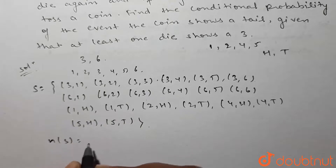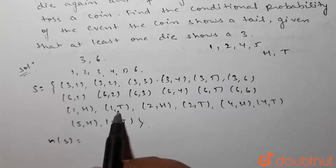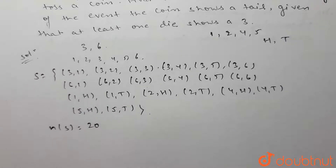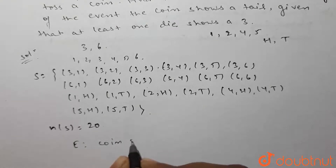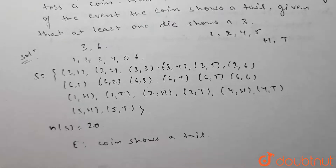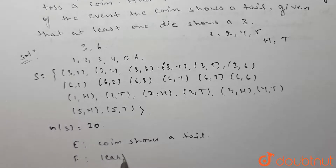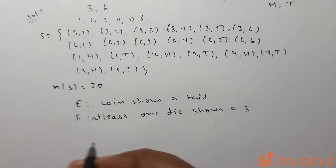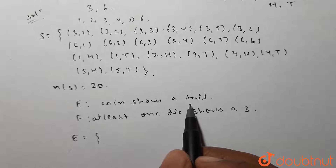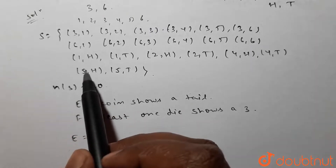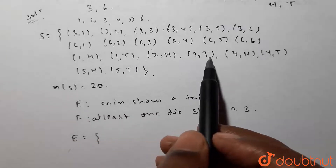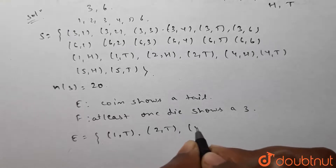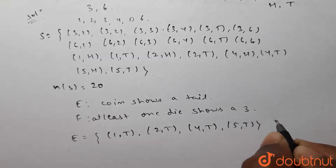So these are all the elements in the sample space. The total number of elements in the sample space is twenty. Let event E be that the coin shows a tail, and let event F be that at least one die shows a three. Event E contains the pairs which have tail: (1,T), (2,T), (4,T), and (5,T). So the number of elements in event E is four.